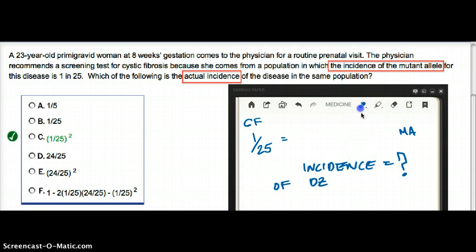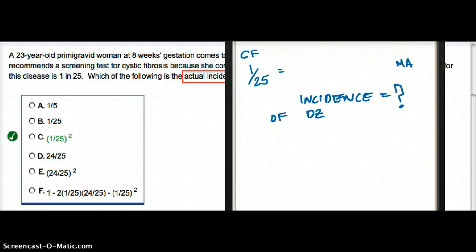Whenever I come across this kind of question where they talk about population and they talk about allele, there is only one equation I go to, and that is the Hardy-Weinberg equation: P squared plus 2PQ plus Q squared is equal to 1. P is going to be normal, Q is going to be diseased.